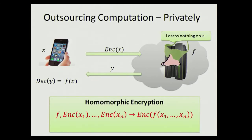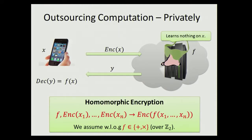Homomorphic encryption is a process that allows you to have an encryption scheme which is semantically secure, and yet, given the description of a function F and an encryption of all the bits of your input X₁ up to Xₙ, a server that doesn't know what's encrypted can still compute an encryption of F(X). It's sufficient to get this for binary addition and multiplication, since we can write any function as an arithmetic circuit over GF(2) and evaluate it gate by gate.